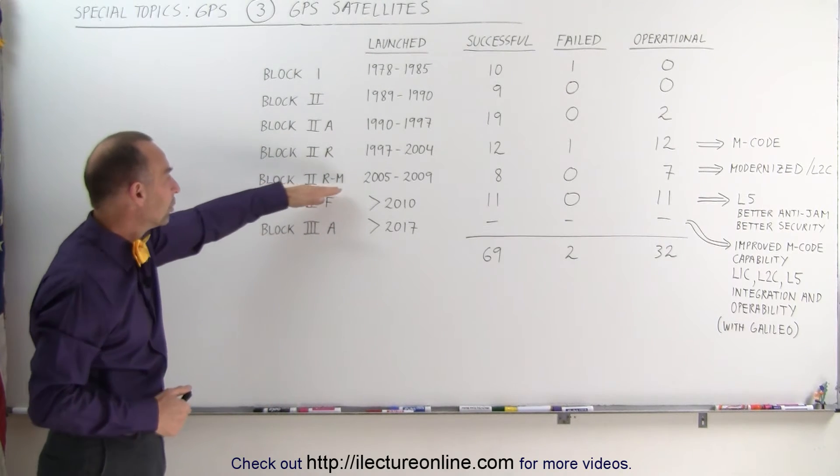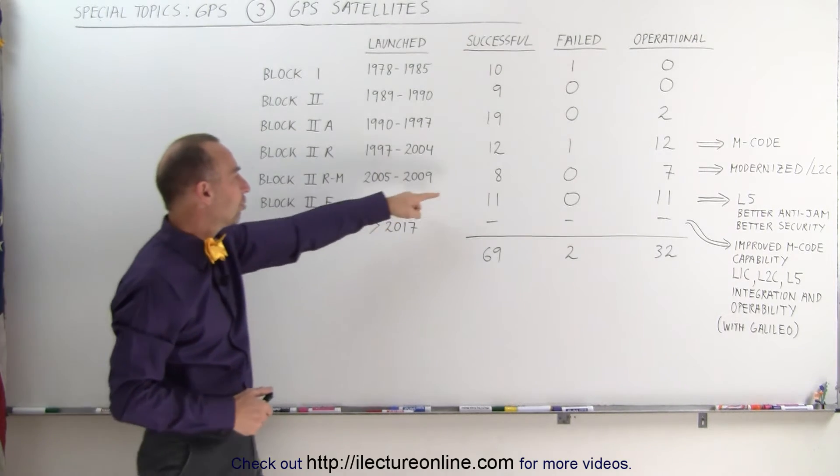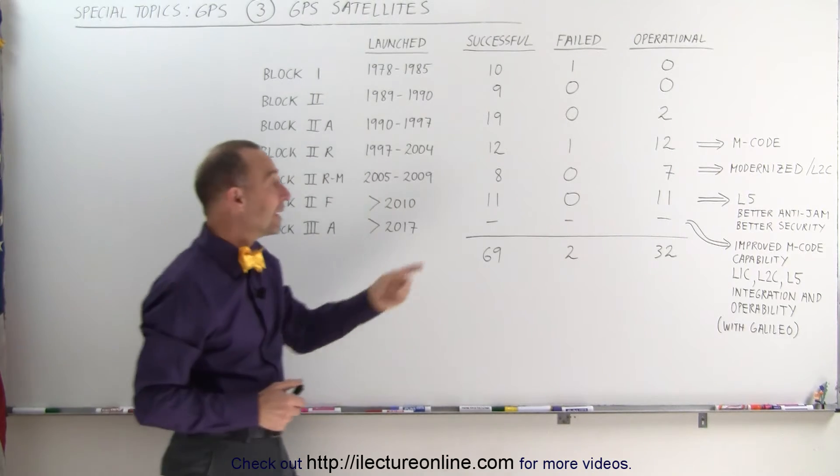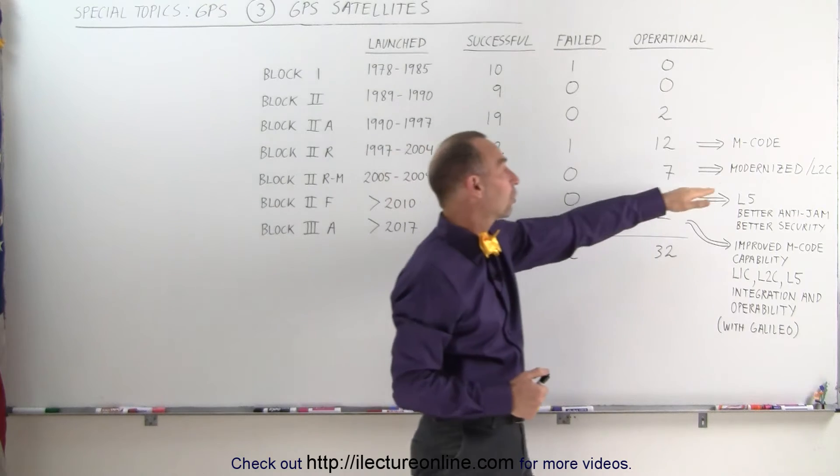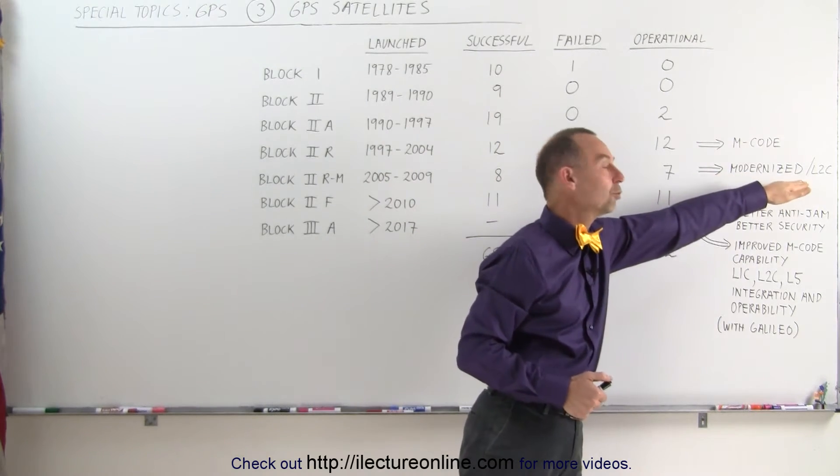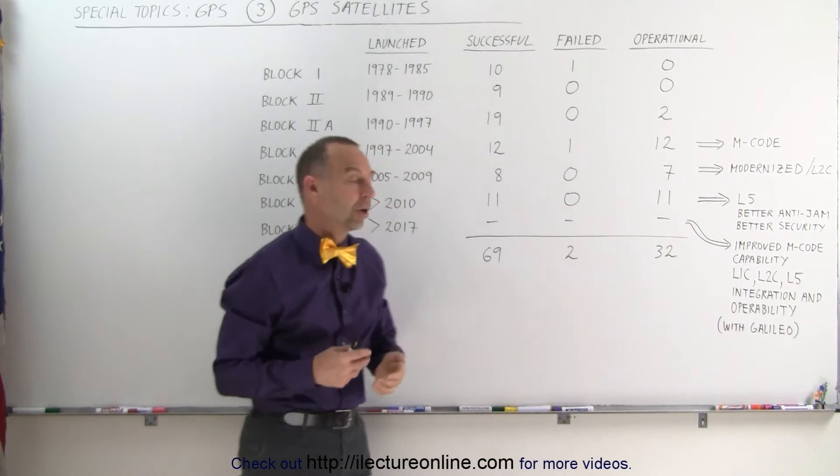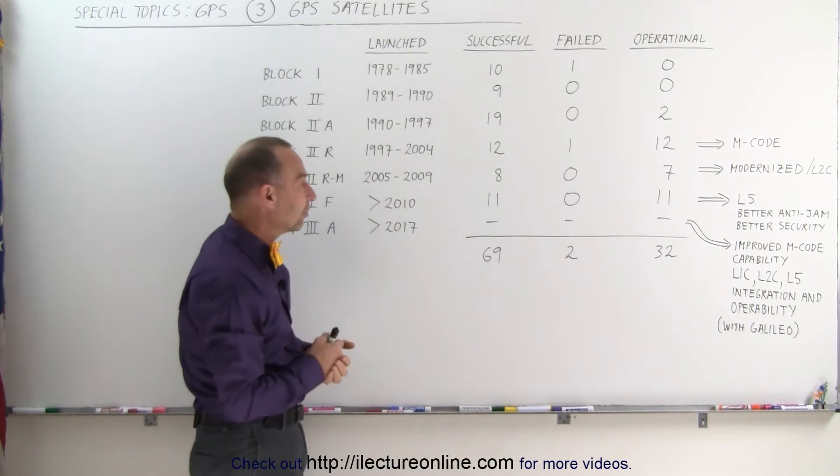Then we have what we call the modernized version of the Block IIR satellites. An additional eight of those were launched back in 2005 through 2009. Out of those eight, seven are still operational. Those are called the modernized Block IIR satellites which also introduced the L2C capability, which later on would be useful in the coordination with the Galileo satellites.